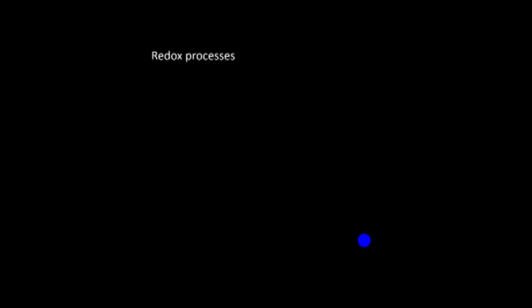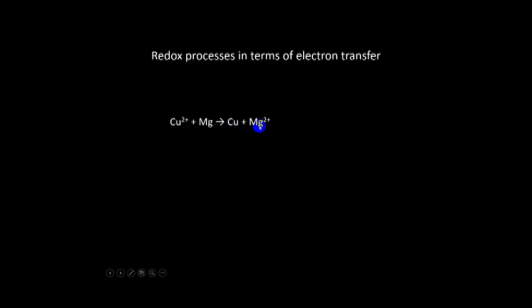Consider the equation: Cu²⁺ + Mg → Cu + Mg²⁺. Copper(II) ion has oxidation number plus two and copper metal is zero — the oxidation number decreases, so copper is reduced; two electrons are gained. Magnesium is zero on the left and Mg²⁺ is plus two on the right — the oxidation number increases, meaning two electrons are lost, so magnesium is oxidized.